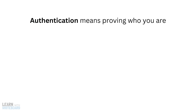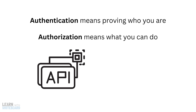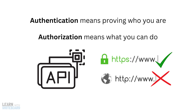Authentication means proving who you are. Authorization means what you can do. And most modern APIs use both. Also, we're assuming that HTTPS is being used everywhere, as sending any credentials over plain HTTP is a hard no. By the end, you'll know not just what they are, but when and why to use them.